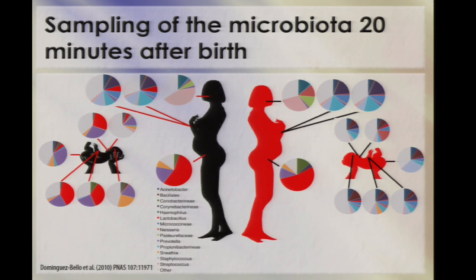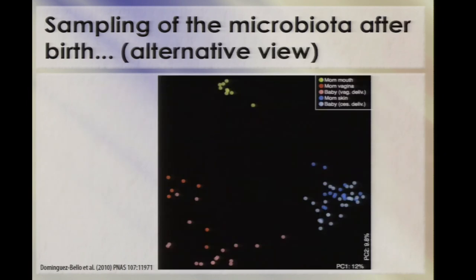If you're delivered vaginally, all of your microbes resemble the vaginal microbiota. If you're delivered by C-section, all of your microbes look like skin. Fascinatingly, despite the very high degree of differentiation in adult body sites, the baby's body habitats are not differentiated initially. All body habitats from vaginal-born babies cluster with vaginal samples, while all body habitats from C-section babies cluster with skin samples from all the mothers. So again, we get the scale of effect size.